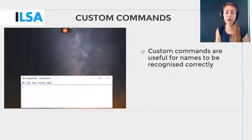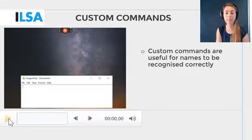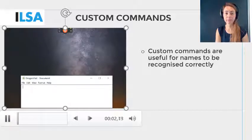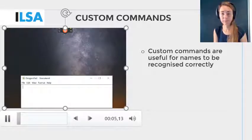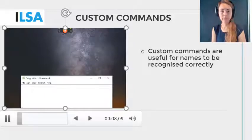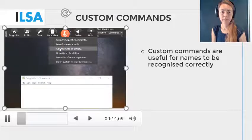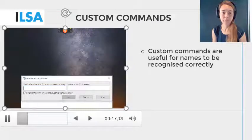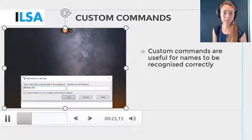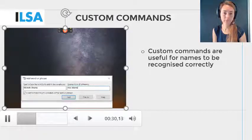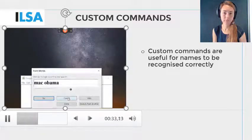Here is a video that demonstrates how to create a custom command for the name Michelle Obama. This short video will show you how to create a custom command in Dragon. First, go to the Dragon Bar, Vocabulary, Add New Word or Phrase. Type the written form of the word that you would like to add and the spoken form, and click on Add. Then click on Go and dictate the spoken form.